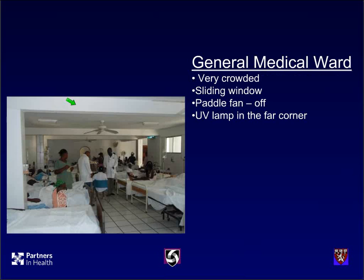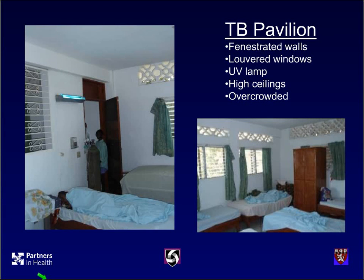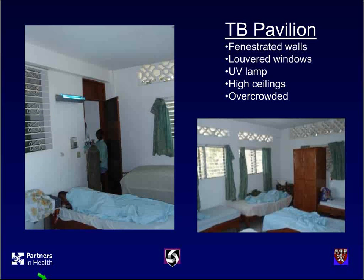Back to Haiti and Cange: the general medical ward where smear-negative patients could be housed had one relatively small window that looked closed, a paddle fan that appeared off, and fairly crowded conditions. The TB pavilion had better ventilation, a UV lamp, and fewer beds — a better situation for infectious patients. Today it might be reserved for patients with XDR-TB who are not on effective therapy, since once on effective therapy these precautions aren't needed very long. Isolation rooms might have a UV lamp, windows that should remain closed, and an exhaust fan to maintain negative pressure.